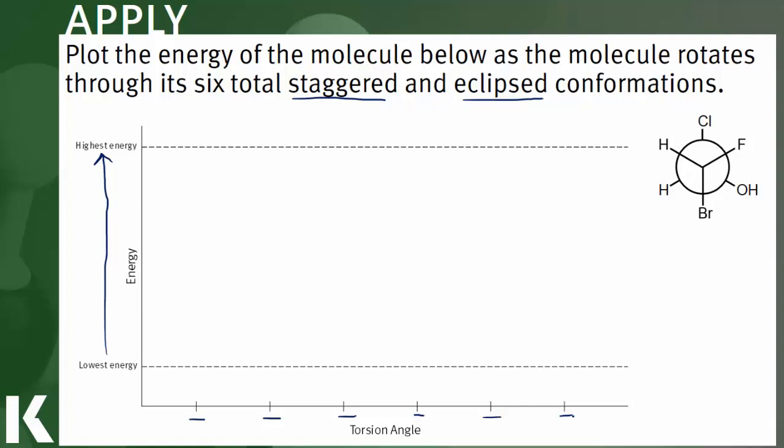Notice that our molecule actually is in its most stable conformation right now because we're taking the two largest functional groups on the front carbon, which is bromine, and that is 180 degrees away from the largest functional group on the back carbon, which is chlorine. So we are starting out in our torsion angle of zero. We're starting out in our anti-state, the most stable, so we're going to put this down here at the bottom.